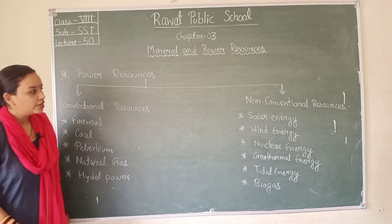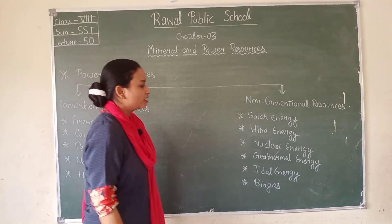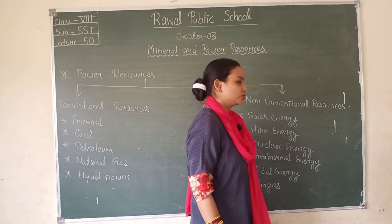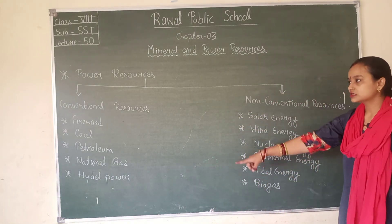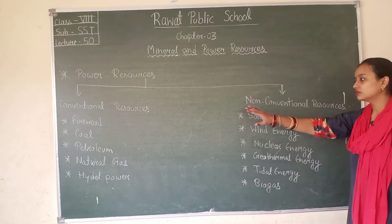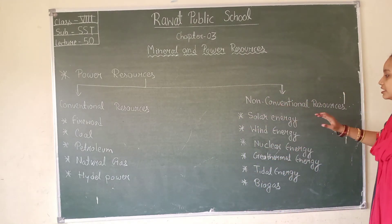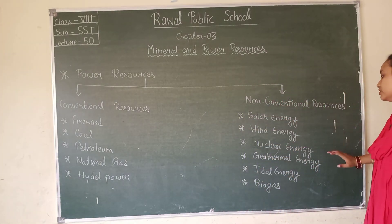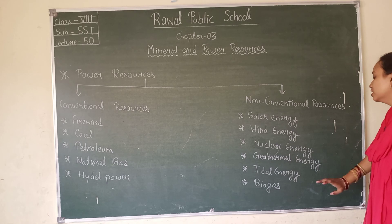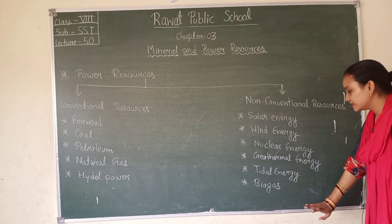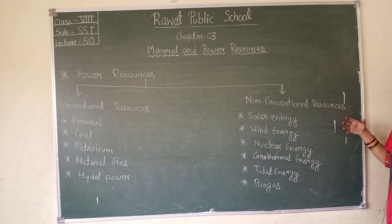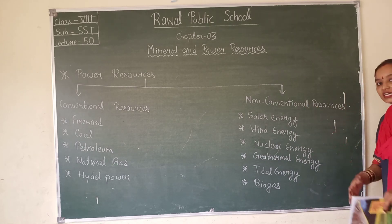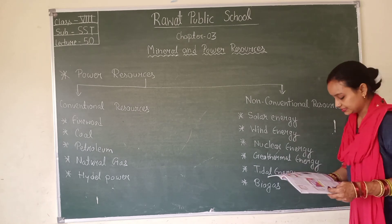Now we will move forward to non-conventional resources. In non-conventional resources we have solar energy, wind energy, nuclear energy, geothermal, tidal energy, and biomass. First of all, solar energy. We get solar energy from the sun — both heat and light energy can be felt by us.